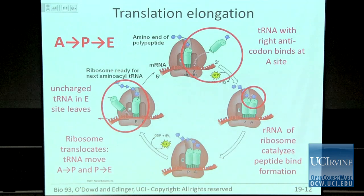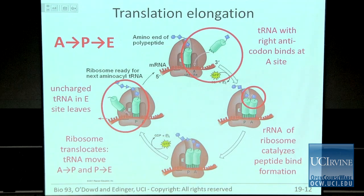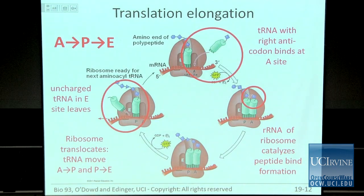To add one amino acid costs a pyrophosphate off an ATP to charge the tRNA, plus two GTPs — one to ensure the anticodon and codon base pair correctly, maintaining fidelity, and another for ribosomal translocation. So it costs one ATP and two GTPs to add a single amino acid to a polypeptide. Translation takes a lot of energy.